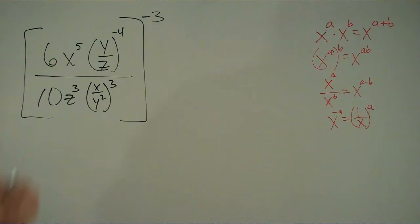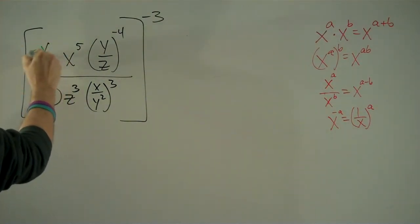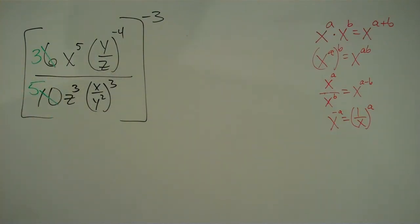First off, the numbers. We have 6 over 10. I think we can all agree those are both divisible by 2, and we can simplify that and call it 3 over 5.